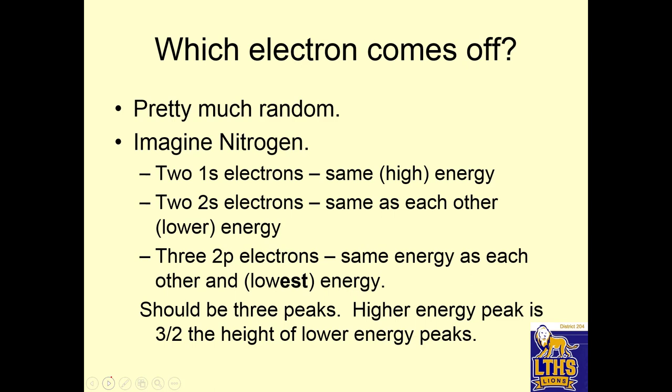So nitrogen, if you remember, nitrogen has two rings. Okay, so this is my nucleus. I'll put a little positive in here. And there's a shell of two electrons, and then there's another shell that had five electrons in it. And those five electrons are divided like this. So nitrogen has two 1s electrons, two 2s electrons, and three 2p electrons. The two 1s electrons would have the same high energy because they are close to the nucleus.